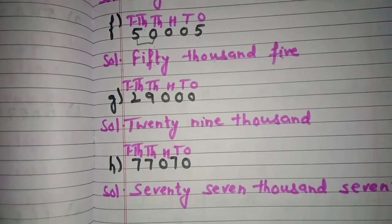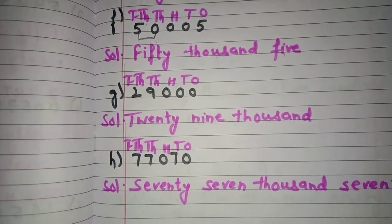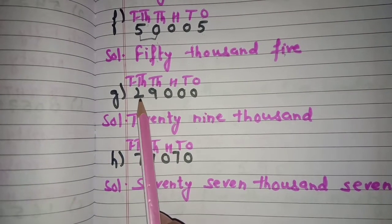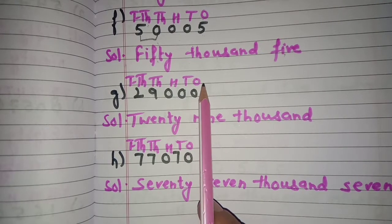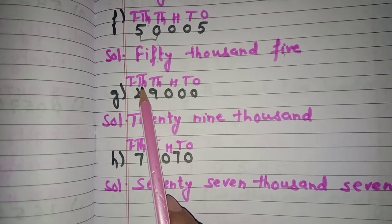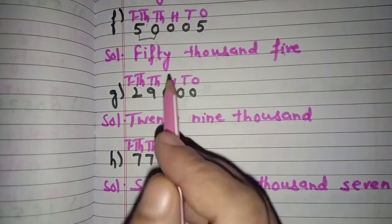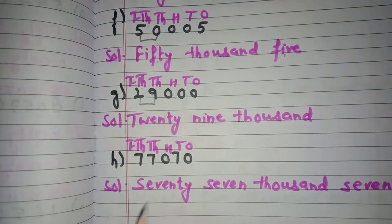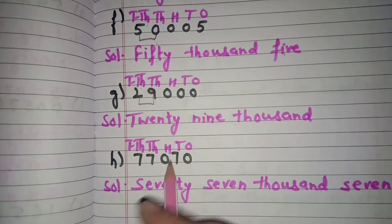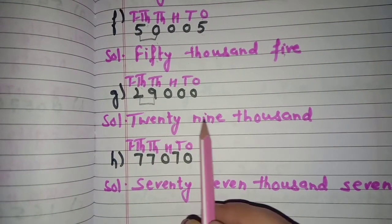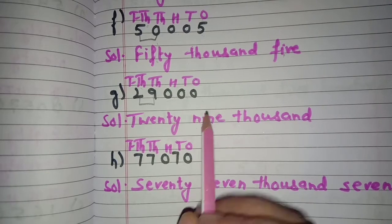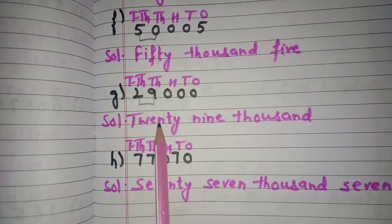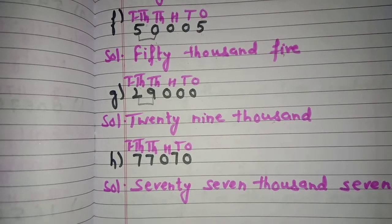Now next: 29,000. First of all mention the places. Then 2 and 9 come under the thousands period, so it is 29,000. And here we have all zeros. So we have to write only twenty-nine thousand.